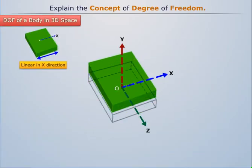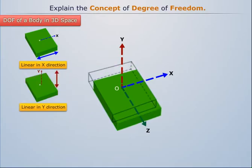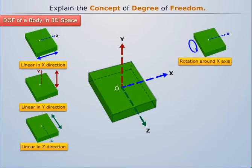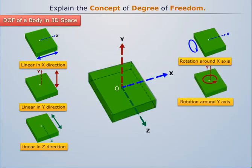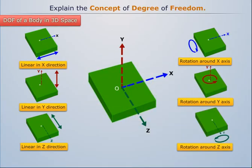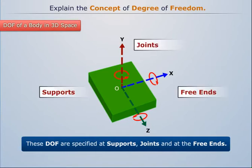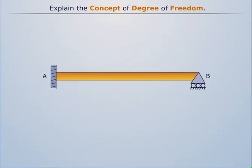It is necessary to consider all the independent degrees of freedom while writing the equilibrium equations. These degrees of freedom are specified at supports, joints, and at the free ends. Let's consider a propped cantilever beam to understand degrees of freedom.